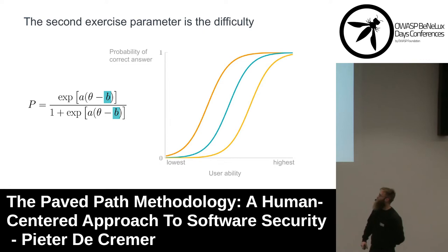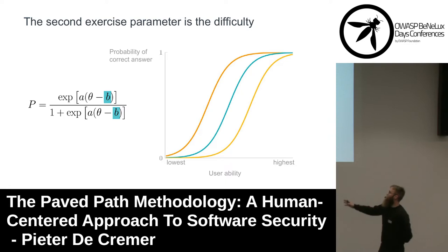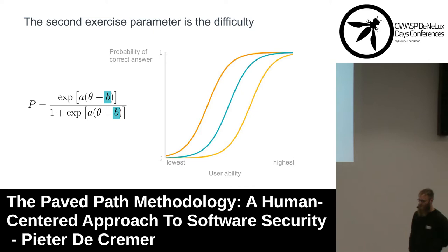The second parameter is the difficulty parameter, which corresponds to a translation on the x-axis. If we take a look at a user of about average ability, it is very unlikely they answer the yellow question correctly, but very likely they answer the orange question correctly. So this is the difficulty of an exercise.